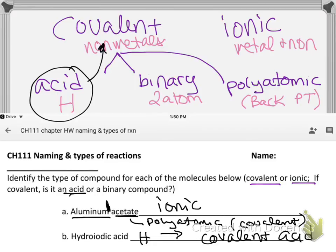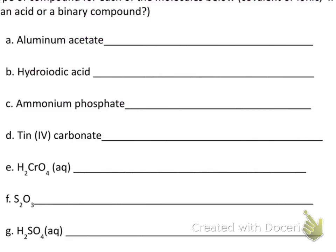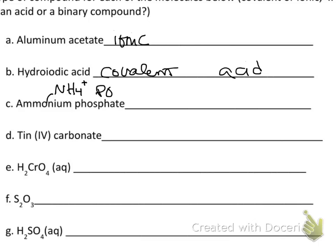Aluminum acetate is ionic, hydroiodic acid is a covalent acid. For ammonium phosphate: 'ammonium' doesn't sound like an element, so we look at the back of the periodic table where it's listed as NH4+. Phosphate is also on the back of the table — all the way at the bottom — listed as PO4 3−.